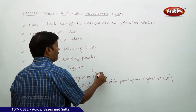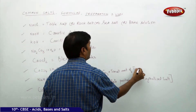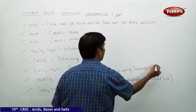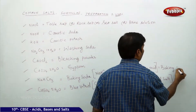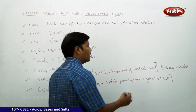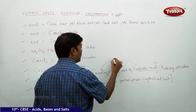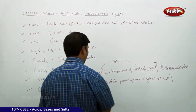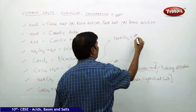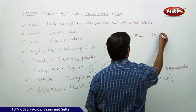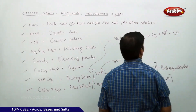Baking soda, NaHCO3, when mixed with a small amount of tartaric acid, becomes baking powder. The tartaric acid supplies H+ ions to the baking soda. The reaction is: NaHCO3 + H+ → CO2 + Na+ + H2O.